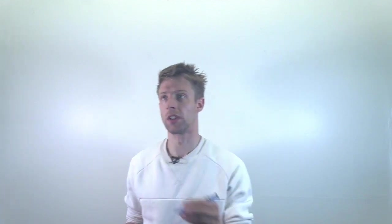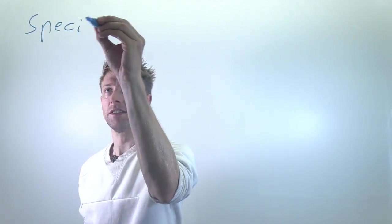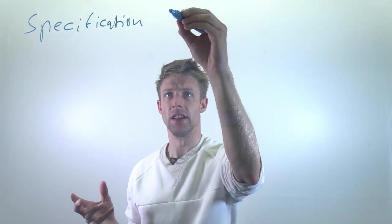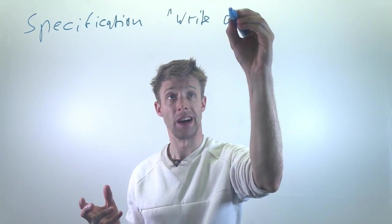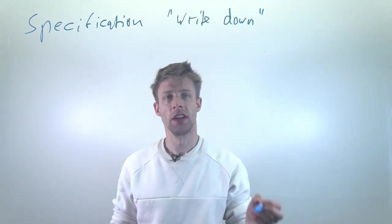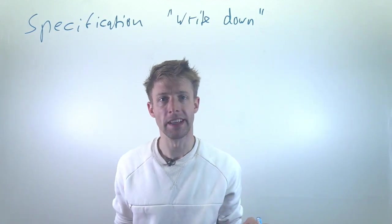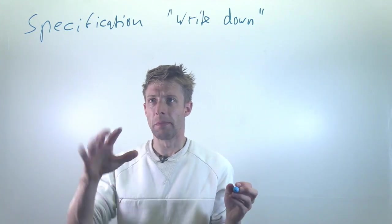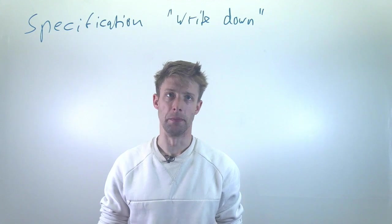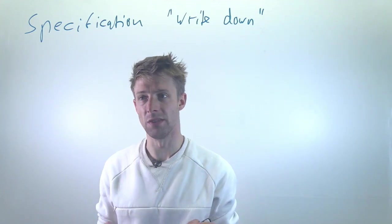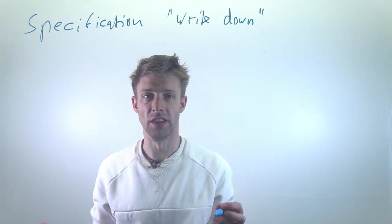Welcome to part 3 of this requirements engineering module. We'll now talk about requirements specification — essentially how to write them down: in language, in text, drawn as a model, or putting them into a tool like Jira. It's all about getting them into written form, and it's not easy to decide how you should write them and who is the receiver of these documents.